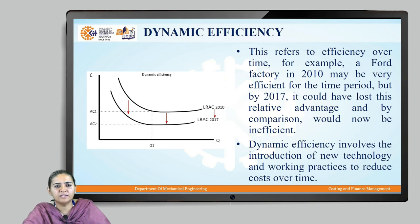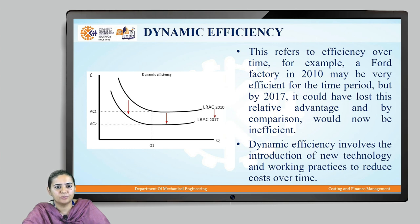What could be the reason for this dynamic inefficiency? It is basically the introduction of new technology and work practices to reduce the cost over time. Thank you.